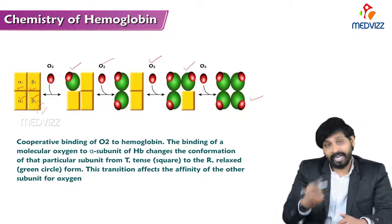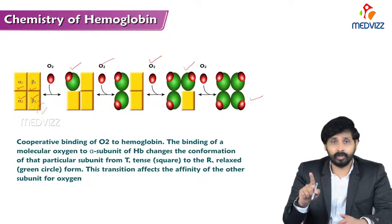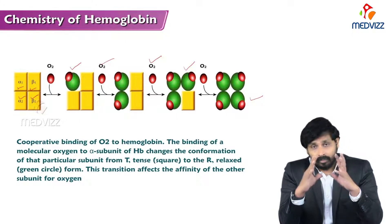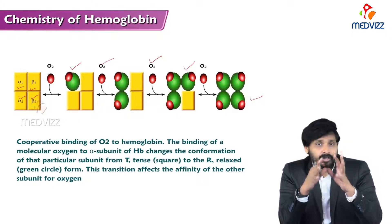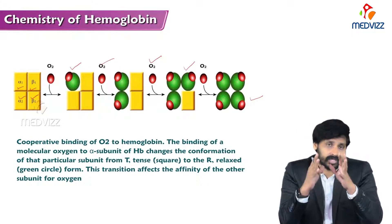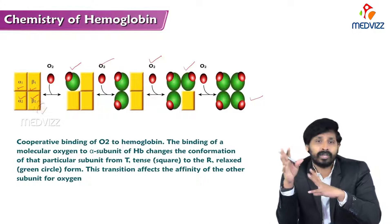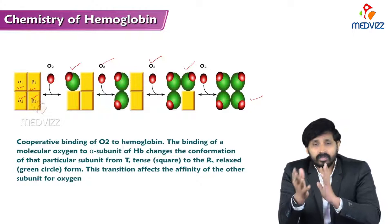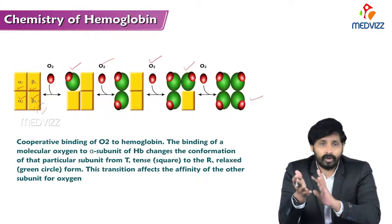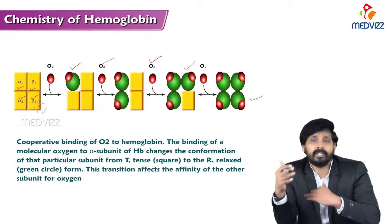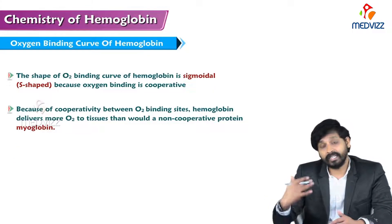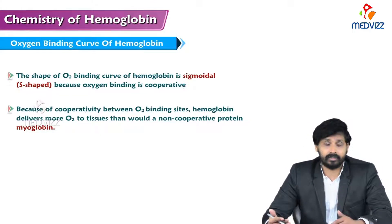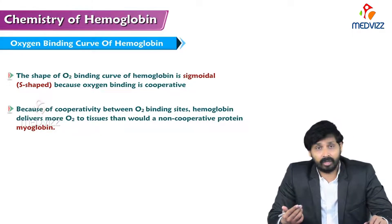How is this possible? The binding of the first oxygen to the alpha chain causes conformational changes. Deoxygenated hemoglobin is known as the tense form or T-form, and oxygenated hemoglobin is known as the relaxed form or R-form. When one oxygen binds, the conformation shifts from T-form to R-form, enhancing the affinity of oxygen binding to the heme molecules of the remaining globin chains.